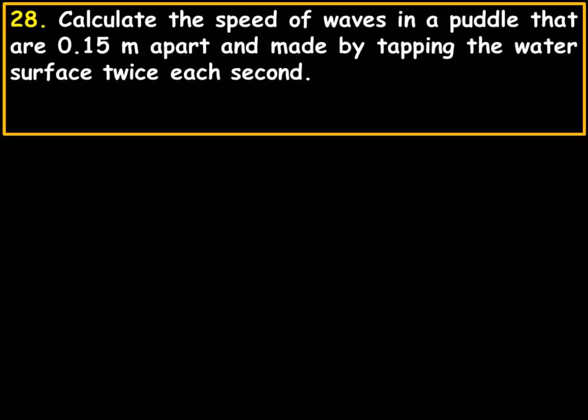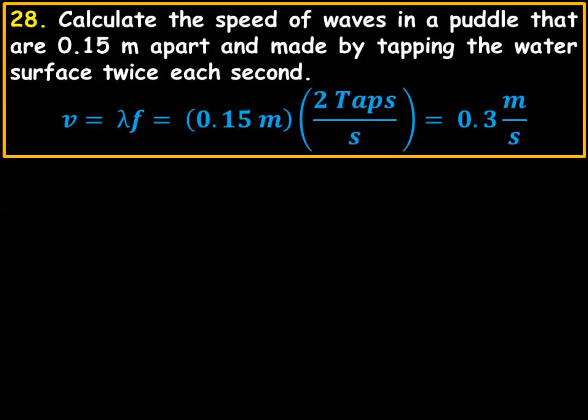So the velocity of a wave is calculated by multiplying the wavelength, 0.15 meters, times the frequency, which is two taps per second. That's the frequency. Two cycles per second, or just two per second, or two to the negative one. So it's meters, sorry, two second negative one. In other words, that would be two divided by one second. Let me not confuse things. So it would be lambda f, which would be 0.15 times two, which is 0.3 meters per second.